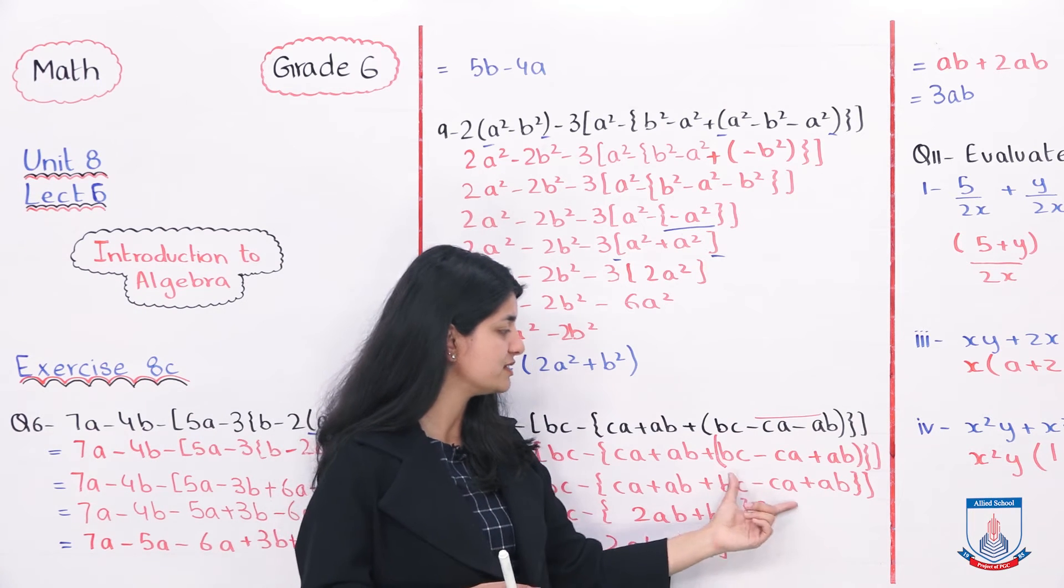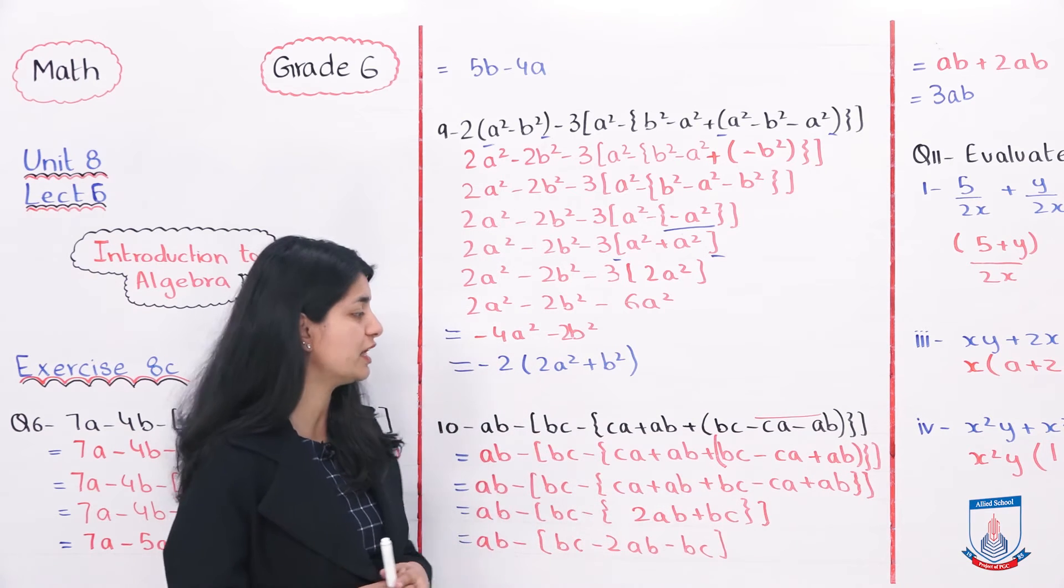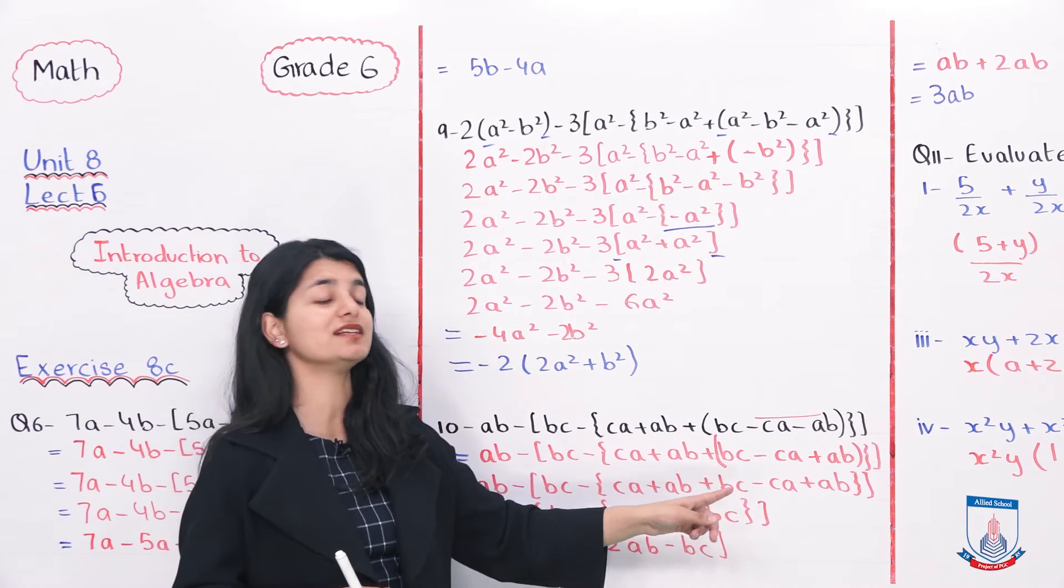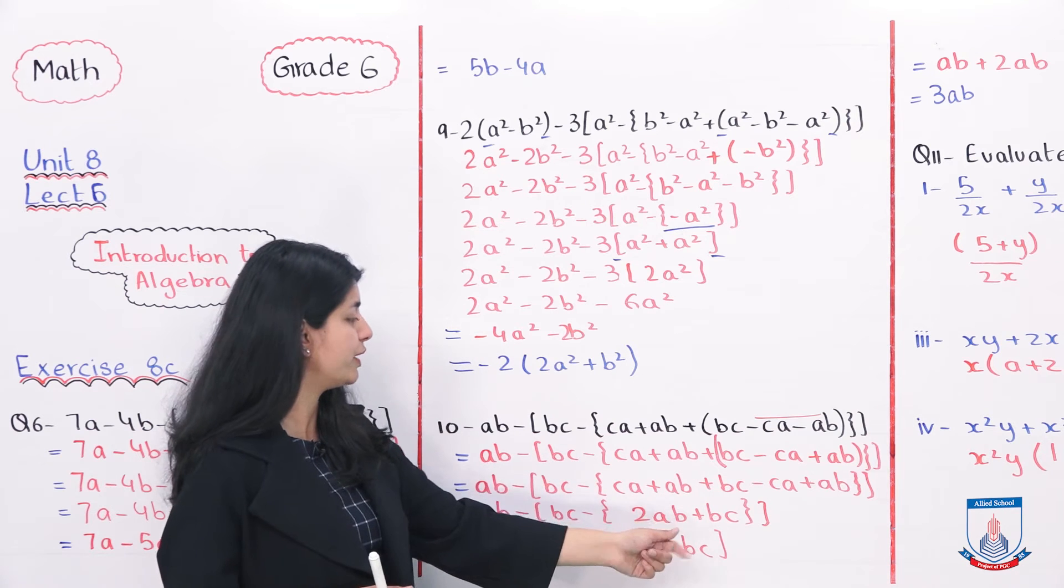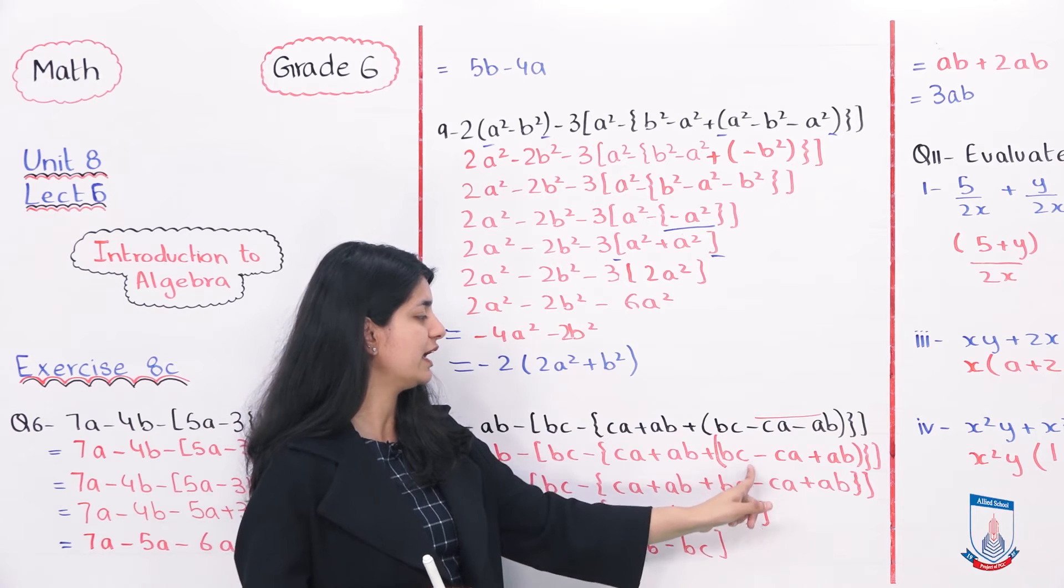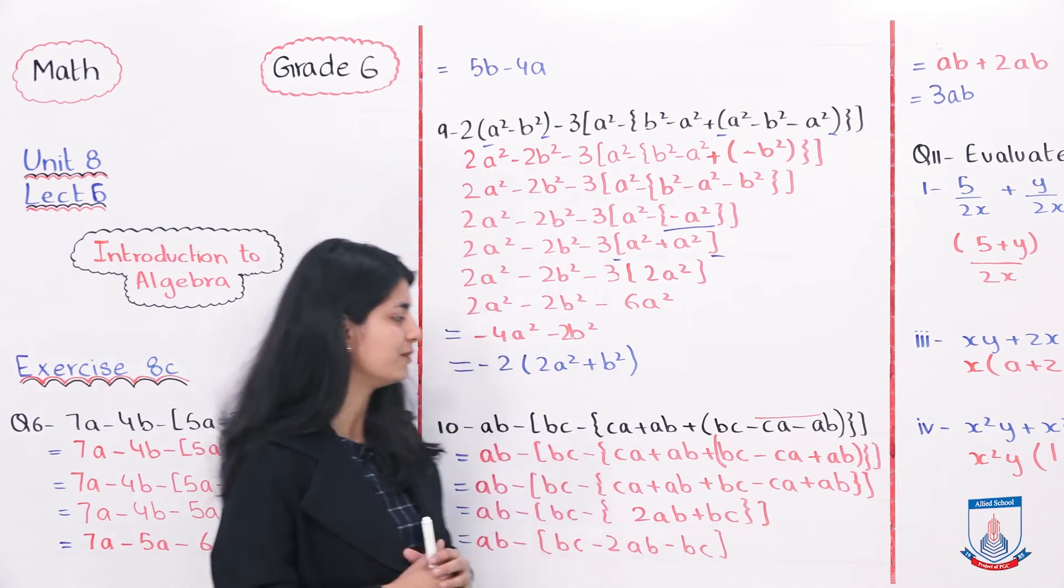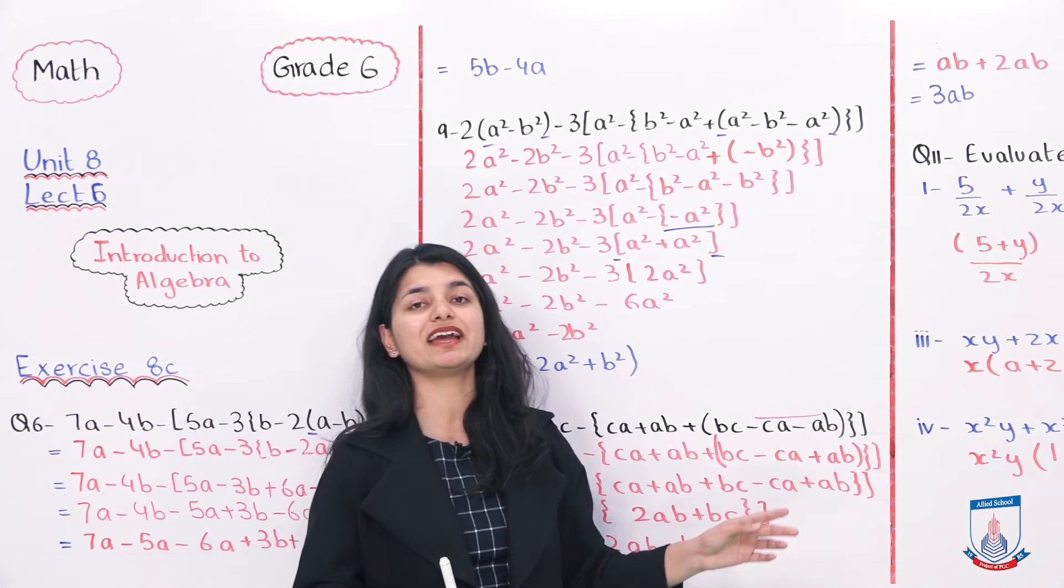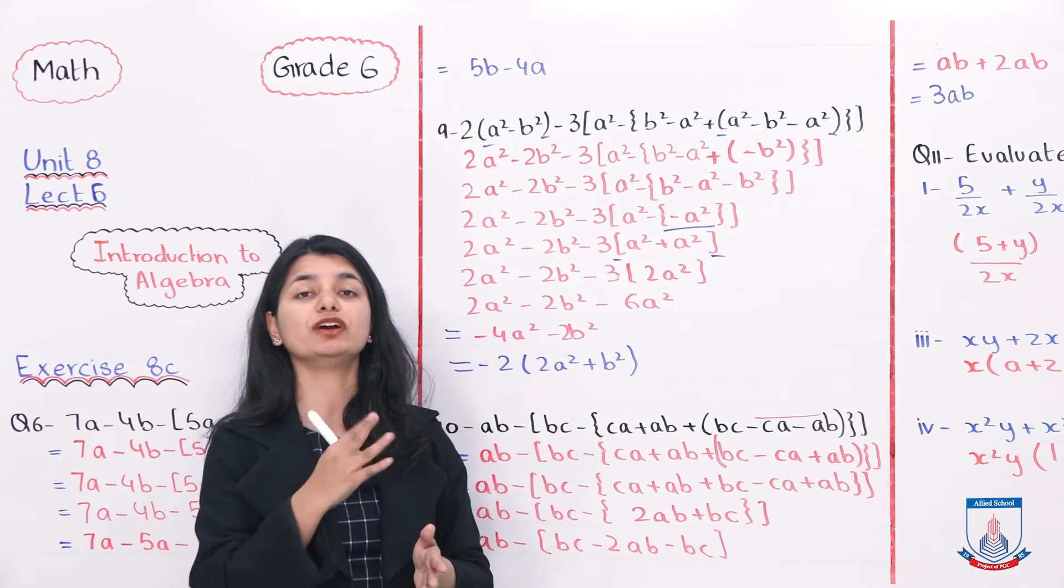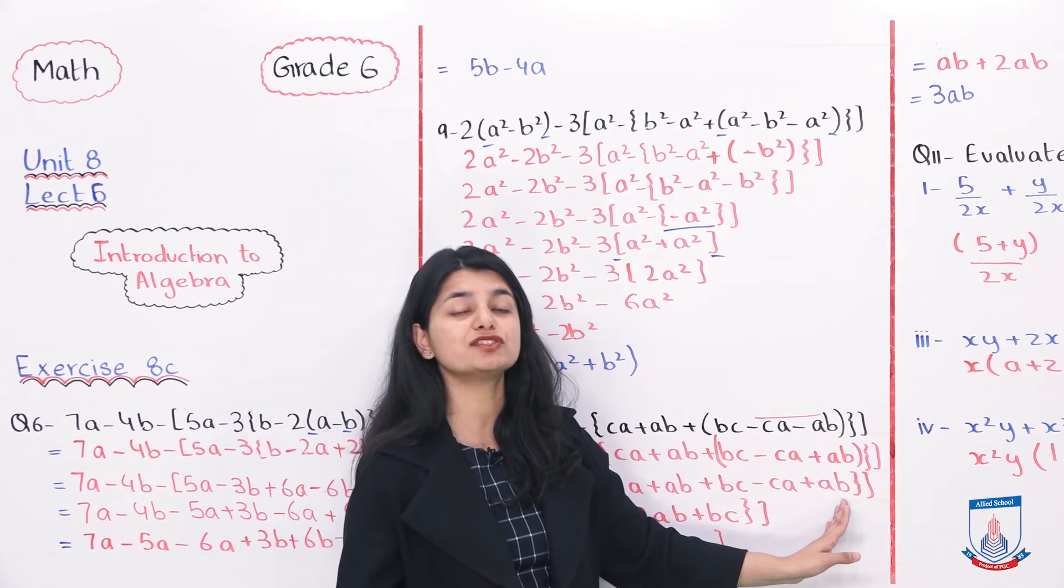Uske baad humne dekhna hai, apne parenthesis ko. Uska tariqe ye hai ki, ye teeno aapne se solve nahin ho saktye. You will simply start by changing the signs. What we are going to do is, plus BC minus plus minus jo hai, aapka minus CA and then, aapka plus into plus jo hai, wo ha aapka plus AB ban gaya. Is tariqe se all your plus signs became plus, all your negative or different signs became minus. Aur aapne kya ki hai? Aapne apne parenthesis ko open kar li hai.